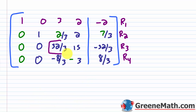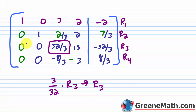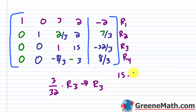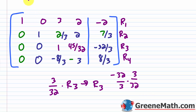Now I want a 1 in the third pivot position. These two columns to the left are done. I'll multiply row 3 by 3/32. The zeros stay zero, this becomes 1, the next entry is 45/32, and the last one is negative 32/3 times 3/32 — the 32s and 3s cancel — giving negative 1.